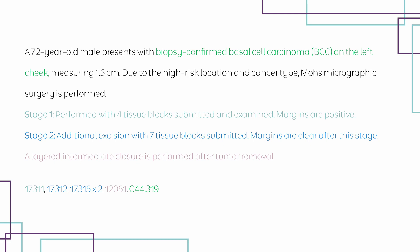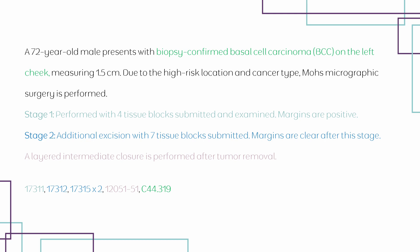Regarding modifiers: 17312 and 17315 are add-on codes, meaning they are always modifier 51 exempt — no modifiers are needed on those codes. Code 12051 is performed on the same site as the Mohs procedure, indicating a multiple procedure modifier is needed to separate it. Therefore, 12051 receives modifier 51. This scenario is a great example for interpreting guidelines on when procedures should be reported separately, applying modifiers, and using combination codes for multiple related conditions.